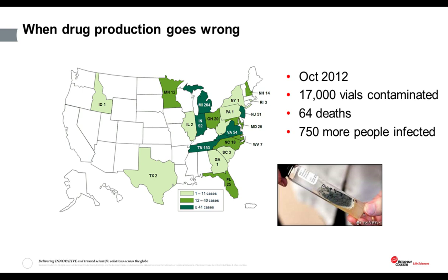Here's a fairly recent example of what happens when clean room contamination control goes wrong. In 2012 in North America, the manufacturing clean room of a small compounding company became contaminated with a spore-forming fungus, which found its way into the drug product. This particular product was a strong painkiller delivered to the patient via direct injection into the spinal cord. Seventeen thousand vials were sadly contaminated, 64 people died from meningitis as the fungus invaded their nervous system, and 750 more people were infected. There is no cure for this very painful infection.